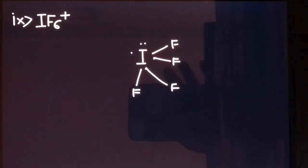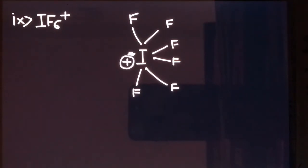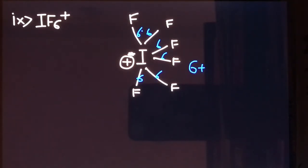Now let's see IF₆⁺. This is a polyhalogen cation. Iodine has seven outermost electrons and it is forming six bonds with fluorine — six fluorines are attached. There is a positive charge, so one electron has been lost by iodine. There are six sigma bonds — one, two, three, four, five, and six — plus no lone pair on iodine. The steric number is six and the hybridization will be sp3d2.